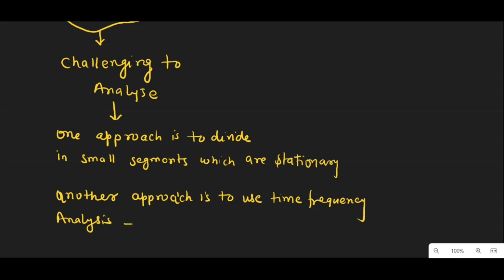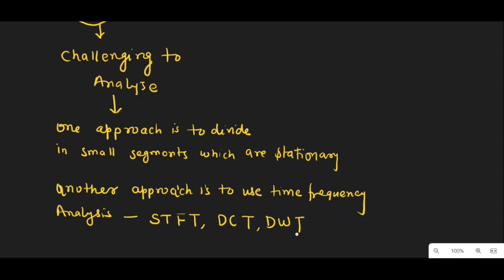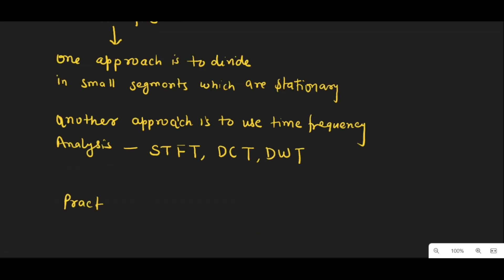There are many practical applications of stationary and non-stationary signals. In communication systems, for example, stationary signals are often used to transmit information over a channel, while non-stationary signals can be used to transmit signals that are modulated over time.